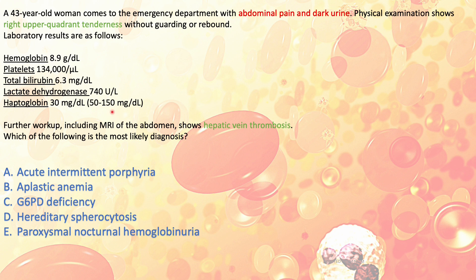Whenever I have a question with labs, I like to read the labs first as they help me reach the diagnosis before even reading the vignette. Here, hemoglobin is low for anyone — male or female — any hemoglobin below 11 is considered anemic. Platelet count is low, below 150,000. Total bilirubin is high and LDH is high.